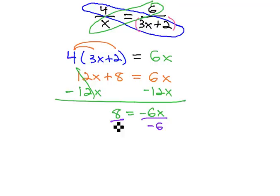And finally, we can divide both sides by negative 6 to get x is equal to negative 4 thirds after reducing.